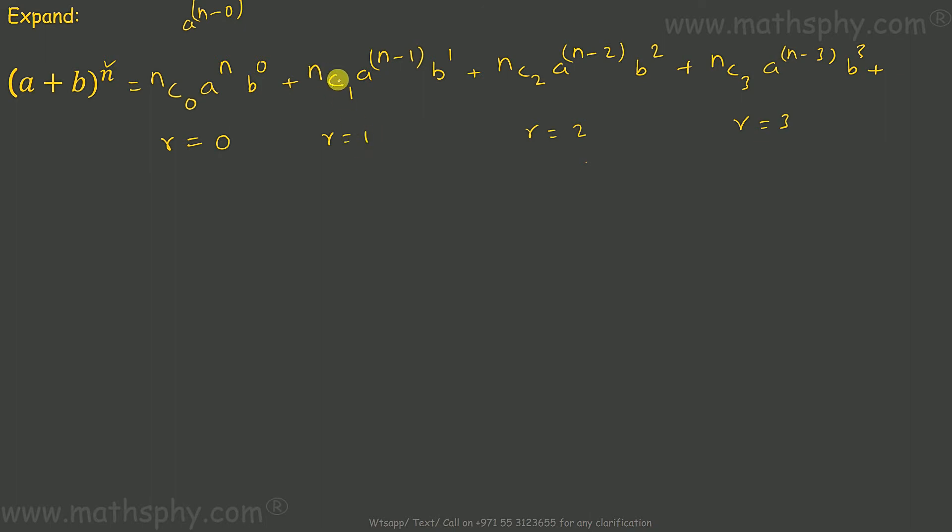Second one, n c 1, r is 1, a raised to n minus 1 or a raised to n minus r, r is 1 here, b raised to 1 or b raised to r here, same thing. r is 2, n minus 2 or n minus r, b raised to r, r is equal to 2. When r is 3, n minus 3 or n minus r, b raised to 3 or b raised to r.